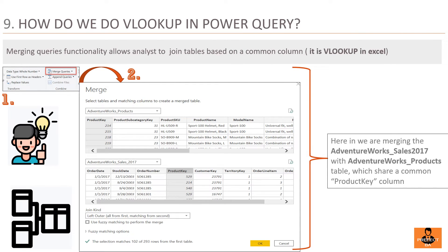Question 9: How do we do VLOOKUP in Power Query? The Merge Queries functionality allows analysts to join tables based on a common column — it is like VLOOKUP in Excel for Power Query. In step 1, select Merge Queries under the Home ribbon. In step 2, select the tables and the type of join; a green tick message will show the number of rows matched in both tables. In the example shown, we are merging the AdventureWorks Sales 2017 table with the AdventureWorks Products table, which share a common product key column. Merging adds columns to the existing table. In general, it is always better to keep tables separate and define relationships between them.